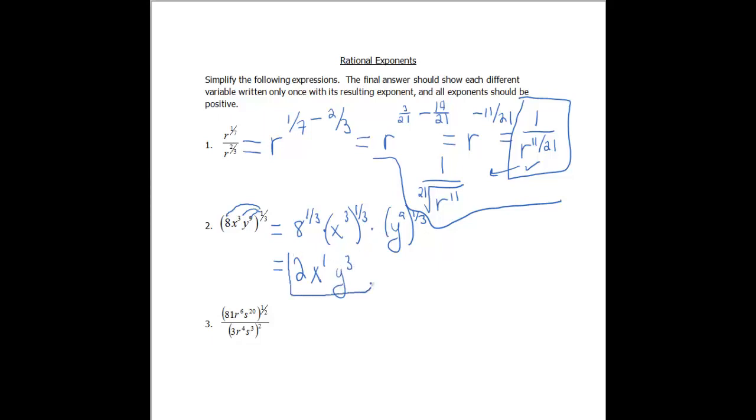y to the ninth to the 1/3. Again, you have to do a power to power, you multiply. So 9 times 1/3 gives us 9 times 1, which is 9, divided by 3, which is 3. So this would be y to the third. So this answer's good, or if you'd rather, you can just write it as 2xy to the third, since that x is on 1 for the exponent.